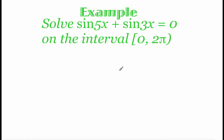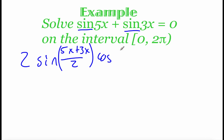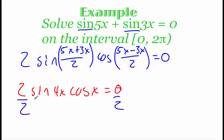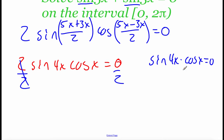The last example uses one of these formulas for equation solving. We've got sine of 5x plus sine of 3x equals 0. Using the sum to product formula, this becomes 2 times sine of ((5x plus 3x)/2) times cosine of ((5x minus 3x)/2) equals 0. Simplifying: 2 times sine of 4x times cosine of x equals 0. Dividing both sides by 2 gives us sine of 4x times cosine of x equals 0. Since this is already a product, we set each factor equal to zero: sine of 4x equals 0 and cosine of x equals 0.